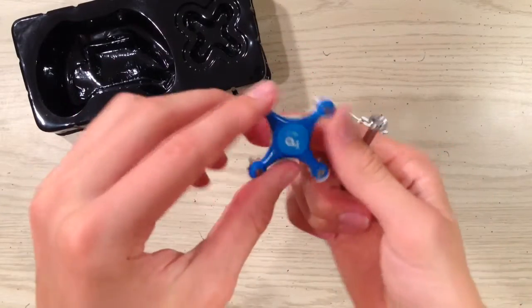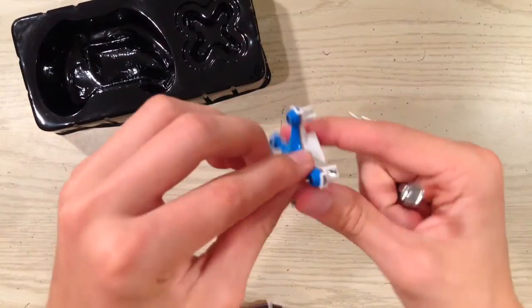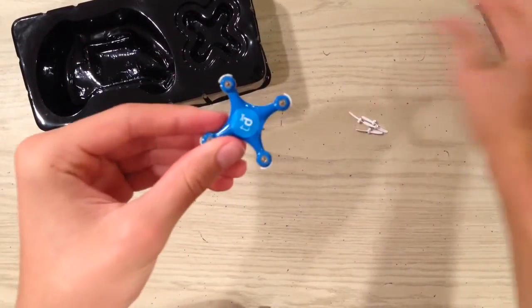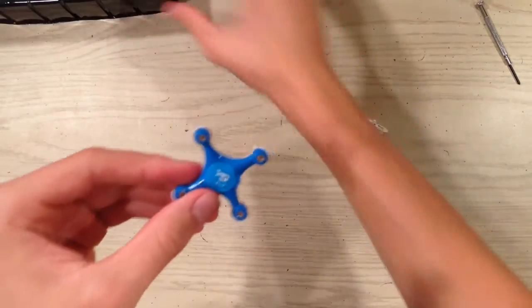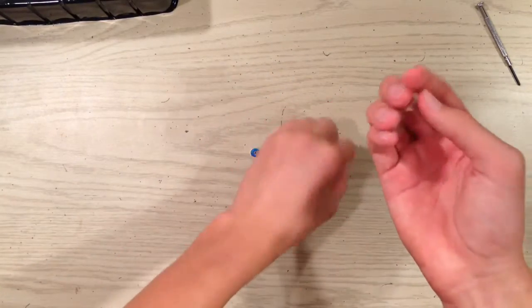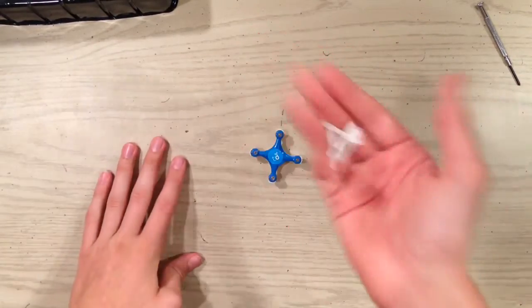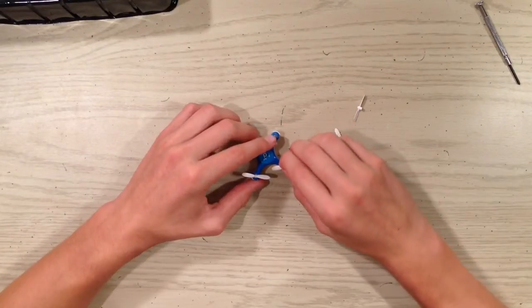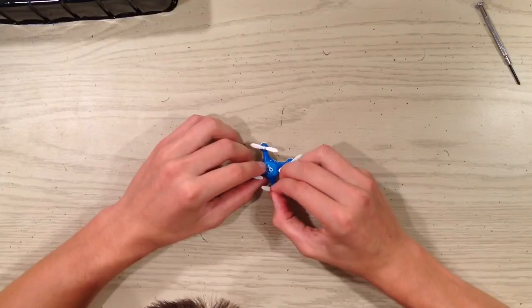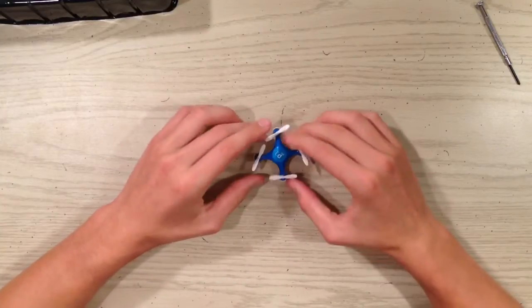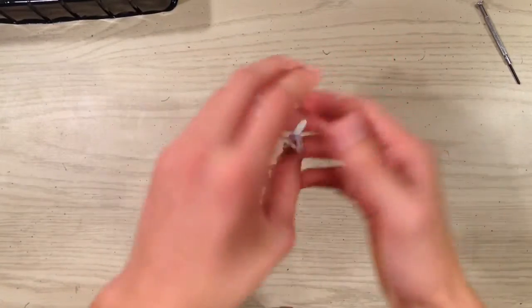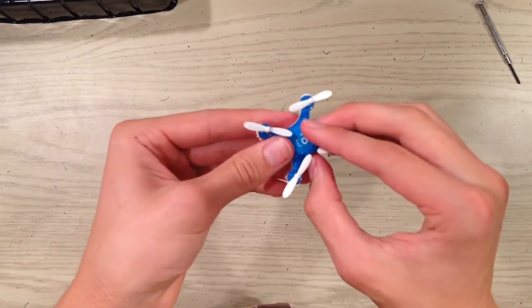Alright, we got all the screws in. The new shell on there. Didn't need a new shell, but I just decided to put it on there anyways. Test out the blue. Now let's put the props back on. And there you have it, a brand new teeny drone.